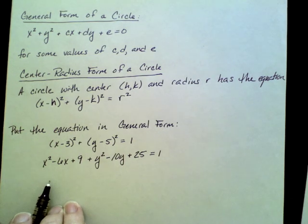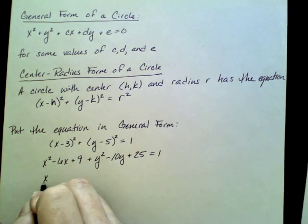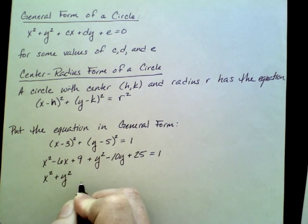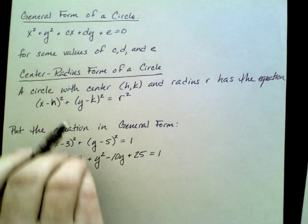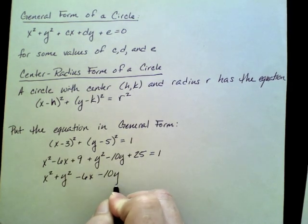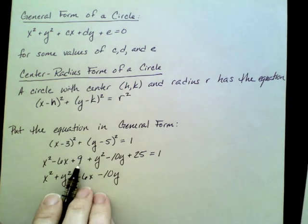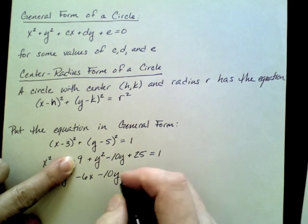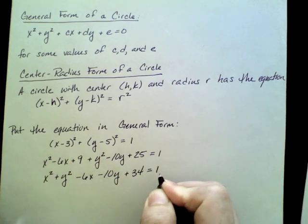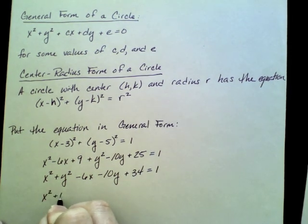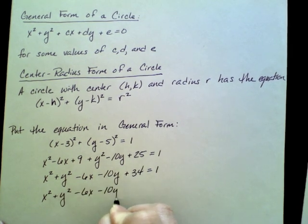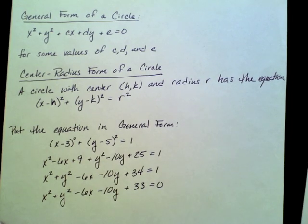Now I want to rearrange things and combine like terms so it's in that general form. That gives me x squared plus y squared minus 6x minus 10y, and 9 plus 25 is 34. The general form requires 0 on this side, so I'll need to subtract 1 from both sides. I'll have x squared plus y squared minus 6x minus 10y plus 33 equals 0. And that is in general form.